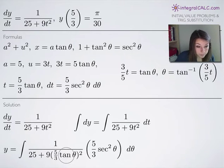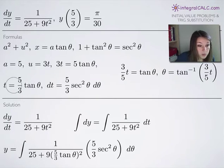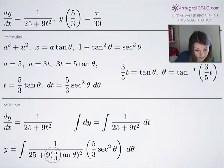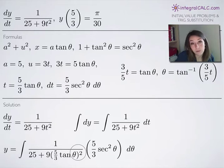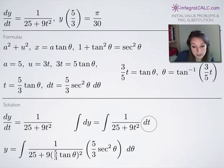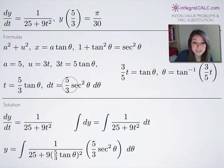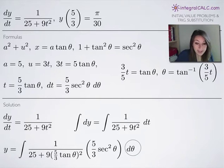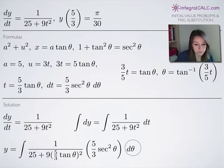For the right-hand side, we substitute t = (5/3)·tan(θ) into the integral — don't forget to keep the squared sign. We also substitute dt = (5/3)·sec²(θ) dθ. Once we've plugged in for both t and dt, we can go ahead and start simplifying.